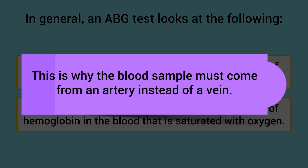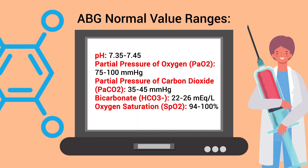Now let's look at the normal value ranges. A normal pH falls within the range of 7.35 to 7.45. Normal PaO2 is 75 to 100. Normal PaCO2 is 35 to 45. Normal bicarb is 22 to 26. And a normal oxygen saturation is 94 to 100 percent.